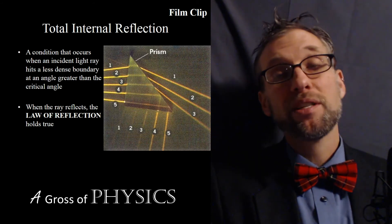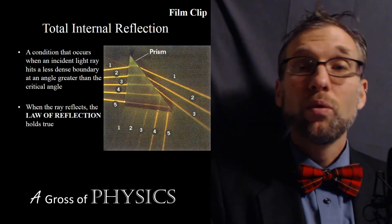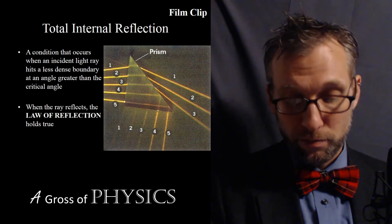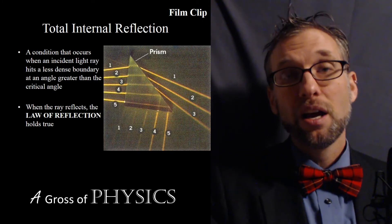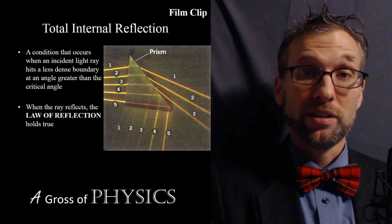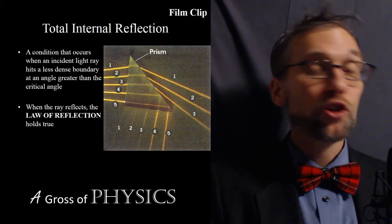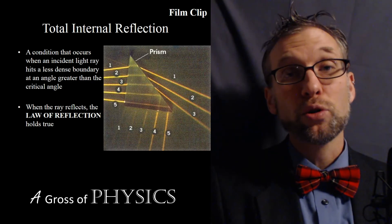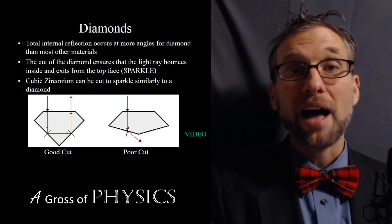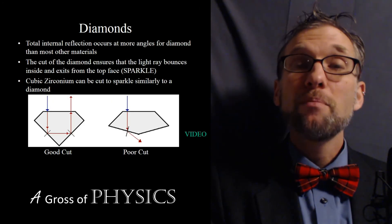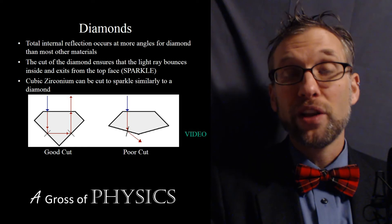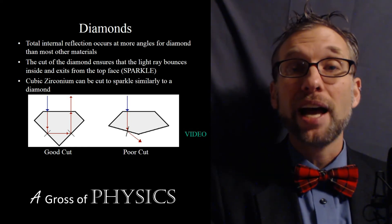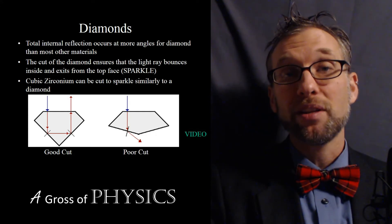Now I'd like to do a couple of sample problems to find the critical angle for different materials and see how being trapped inside different materials affects their characteristics. For example, diamond is going to trap light the most — the critical angle for diamond is in the low 20s.